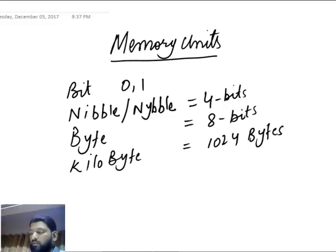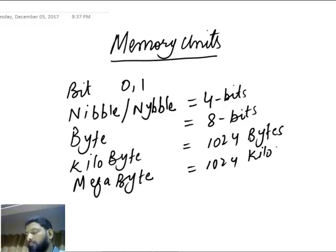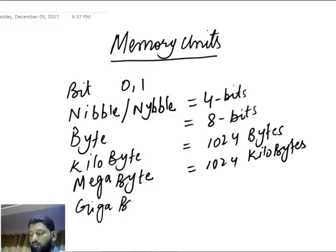Then after kilobyte, you have a megabyte, which is 1024 kilobytes. Then you have gigabyte, which equals 1024 megabytes.